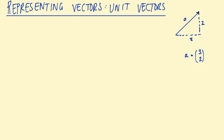We also know we can add vectors together. So if we had another vector b, we could find a plus b — that would be the resultant, which might be vector c. So we know we can represent vectors using column vectors, and we know we can add and subtract vectors. So let's talk about unit vectors.